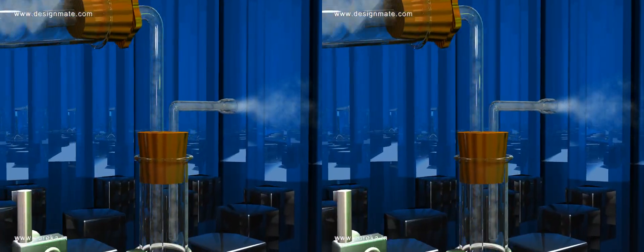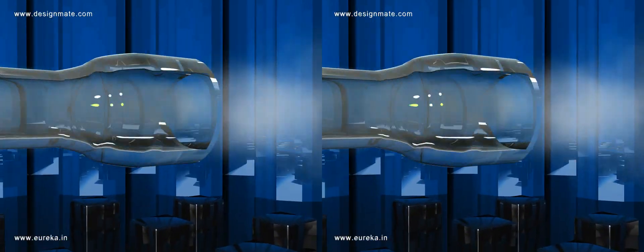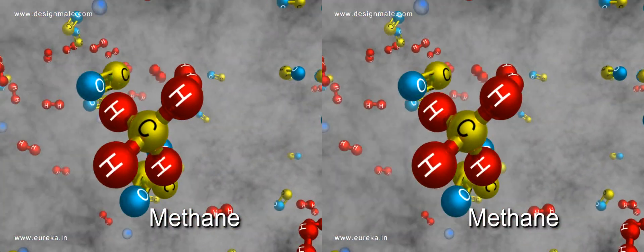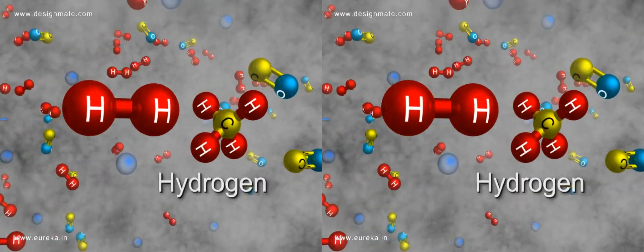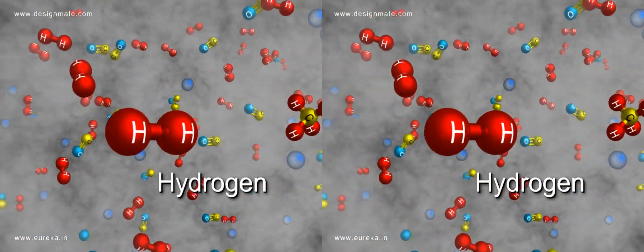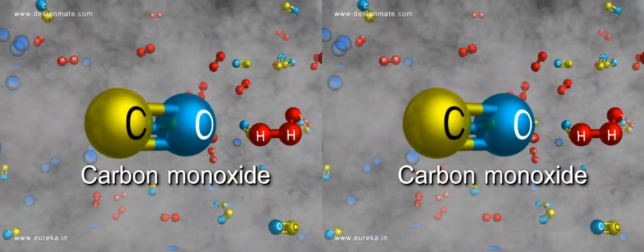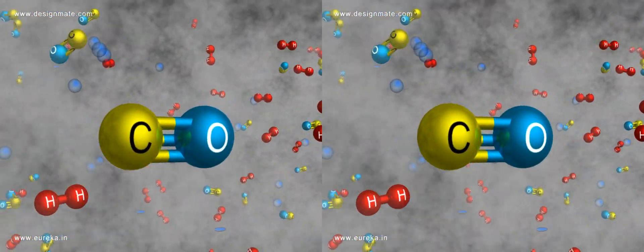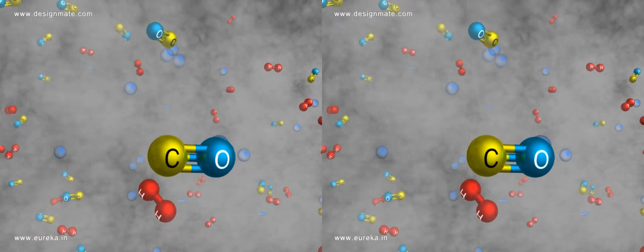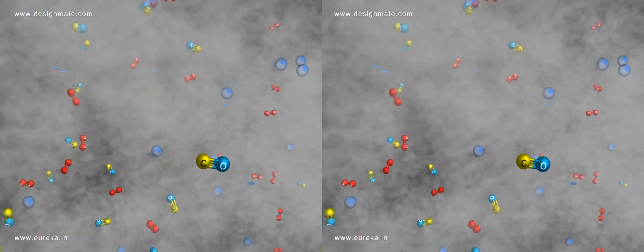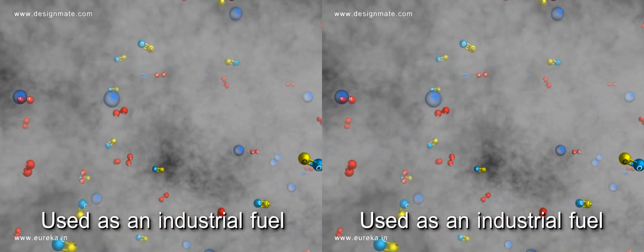Coal gas is mainly a mixture of methane along with hydrogen, carbon monoxide, and other gaseous hydrocarbons, and is used as an industrial fuel.